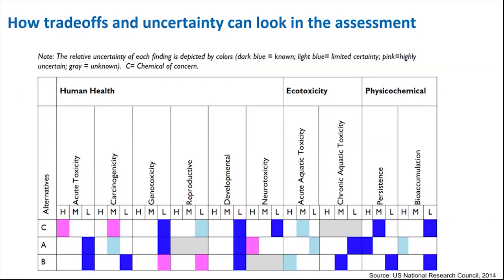The hazards are categorized as high (H), medium (M), or low (L). The color scheme indicates the level of uncertainty: dark blue is known, light blue is limited uncertainty, pink is high uncertainty, and gray is missing data or a data gap. In this example, there are both tradeoffs and issues of uncertainty. For alternative A, there are moderate concerns for carcinogenicity based on data with limited uncertainty, and there are data gaps for reproductive toxicity. For alternative B, acute aquatic toxicity is considered high concern with limited uncertainty, and low concern but low uncertainty for other human health attributes, but no data for neurotoxicity. Concern for persistence and bioaccumulation are also low.